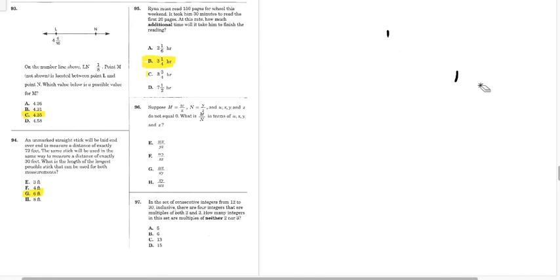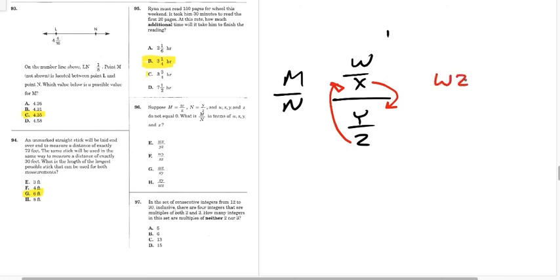Alright. Let's see. Here we have M equals... We need to find M over N in terms of W, X, Y, and Z. Alright, so M is W over X, and N is Y over Z. So, what we have to do, move the X to the bottom, and the Z to the top. So, we end up with WZ over XY. Which is answer G for 96.